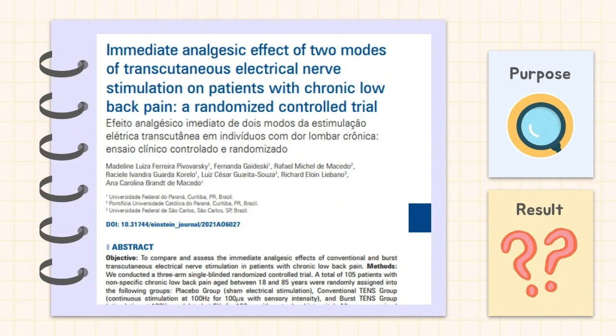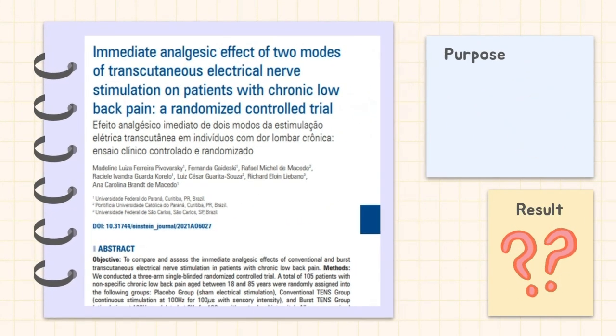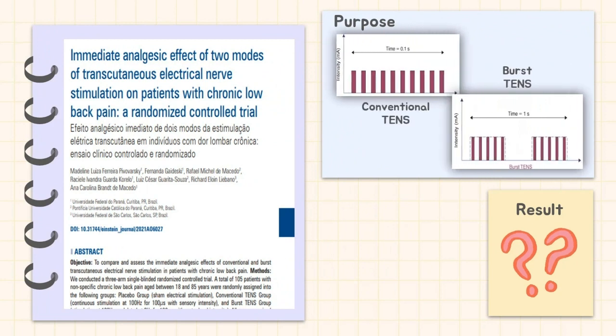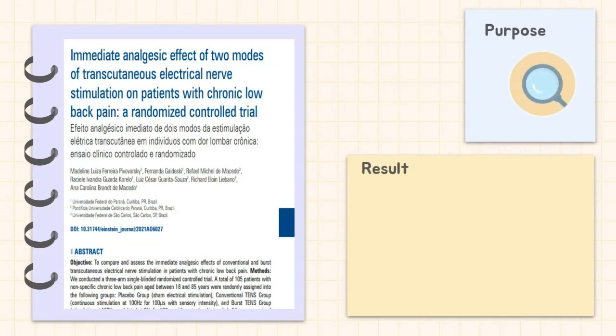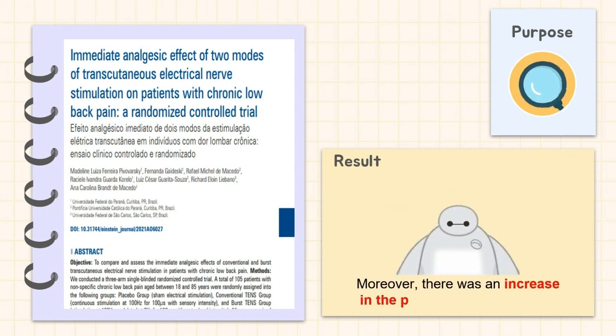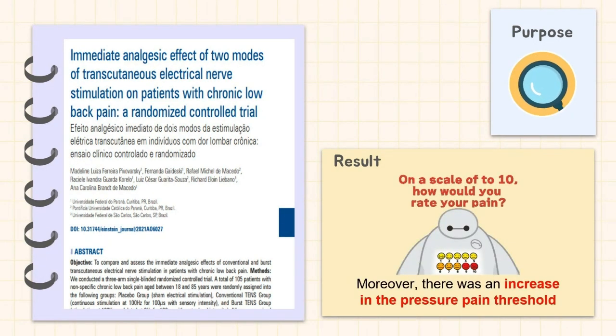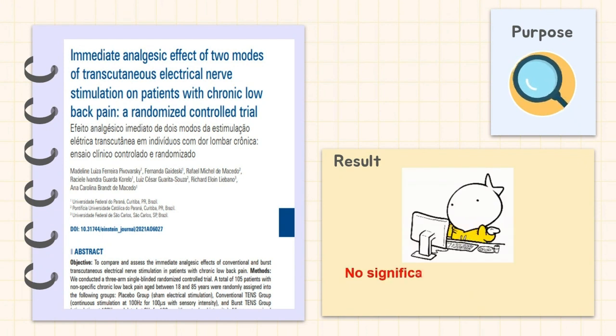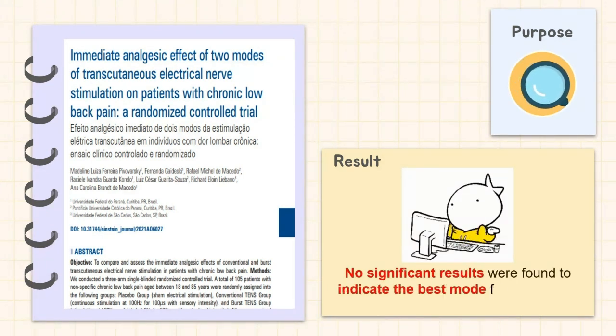The next study is a randomized control trial that was done to compare and assess the immediate analgesic effects of conventional and burst TENS modes in patients with chronic low back pain. The result shows that both TENS modes were effective for pain modulation. Also, it was noted that there was an increase in the pressure pain threshold. However, no significant results were found to indicate the best mode for the treatment of chronic low back pain.